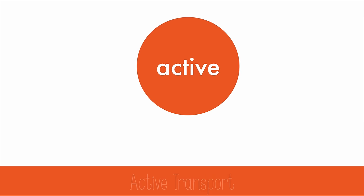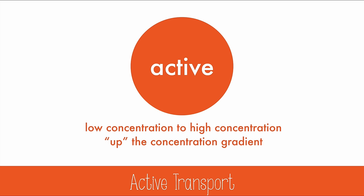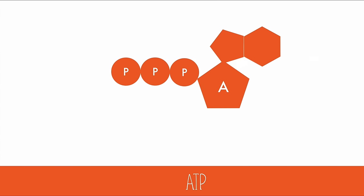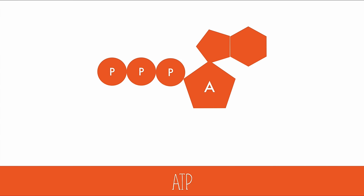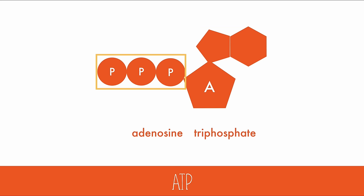Active transport moves from an area of low concentration to an area of high concentration, or up the concentration gradient. This is the opposite of passive transport, and because it's more difficult, it needs the energy molecule called ATP, which stands for adenosine triphosphate, because there's an adenosine molecule and three phosphate molecules.